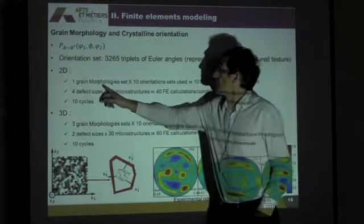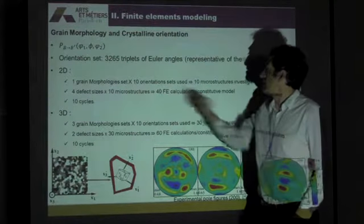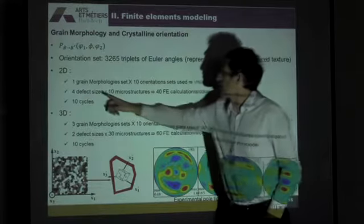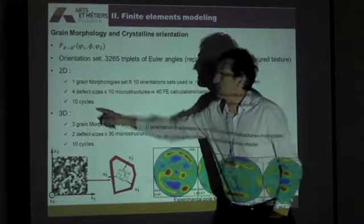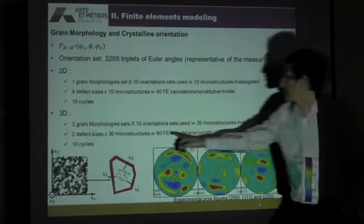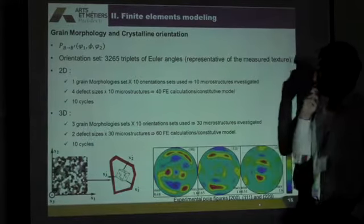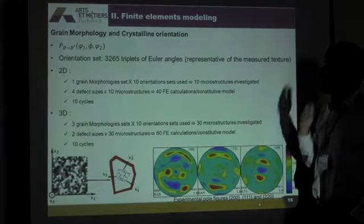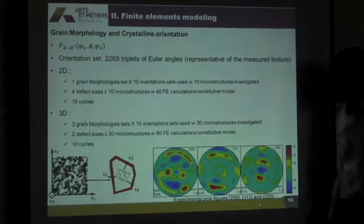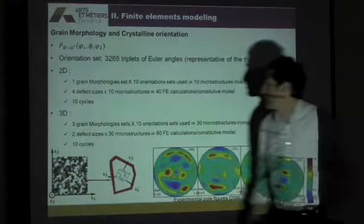In 2D, we get one grain morphology set, times ten orientation sets, used for four defects, and we applied ten cycles. For the 3D, we generate three grain morphology sets, ten orientation sets, and only two defects.